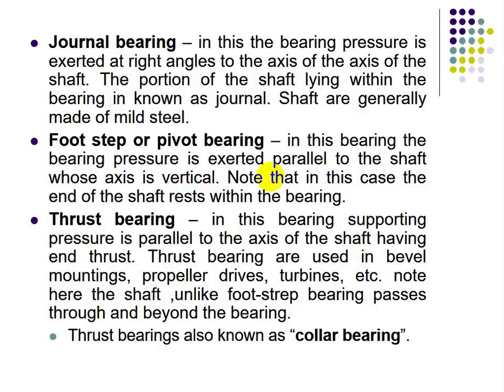In a footstep bearing, the end of the shaft rests within the bearing. The third type is thrust bearing, in which the supporting pressure is parallel to the axis of the shaft. Thrust bearings are used in bevel mounting, propeller drives, and turbines. Unlike footstep bearings, the shaft passes through and beyond the bearing in a thrust bearing. Thrust bearings are also known as collar bearings.